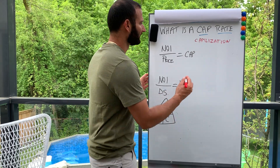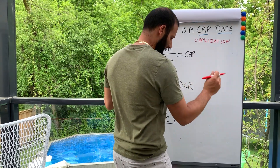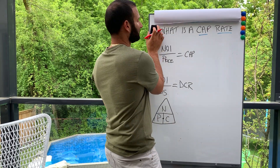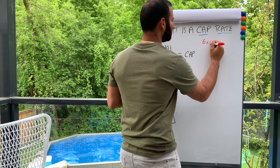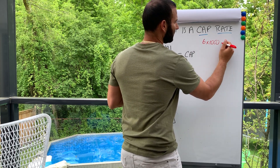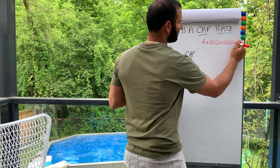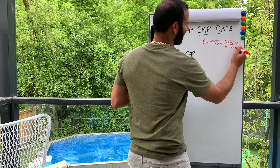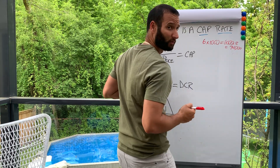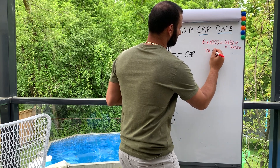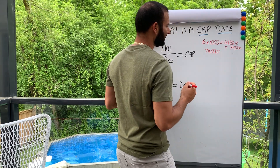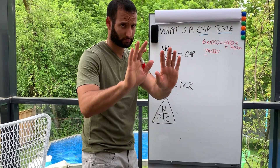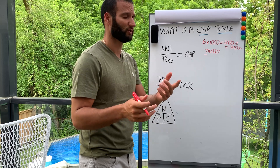Let me demonstrate. If you have a building — let's say it's a six-unit building — and each unit brings in a thousand dollars a month, you've got six thousand a month. Times 12 months a year, that's seventy-four thousand dollars in annual income.